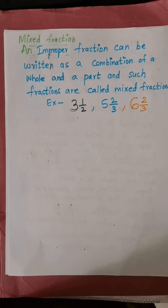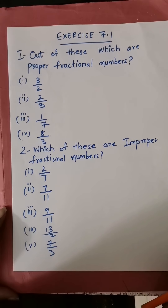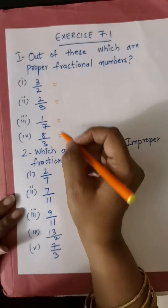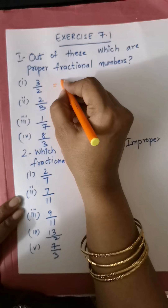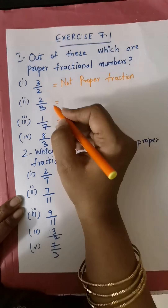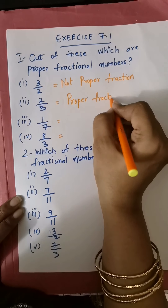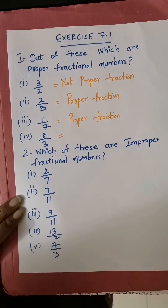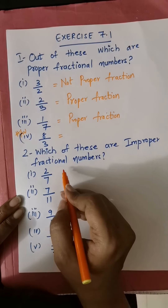Now let's revise. Out of the given numbers, which are proper fractions? We know that in a proper fraction the numerator is smaller than the denominator. Is 2 by 3 a proper fraction? Yes, because 2 is less than 3. Is 1 by 7 a proper fraction? Yes, because the numerator is less than the denominator. You can try the others.